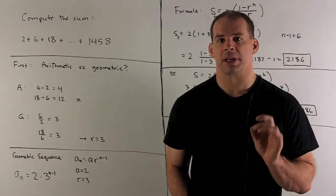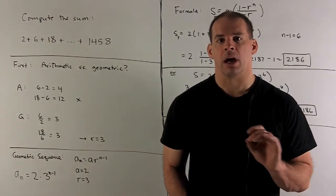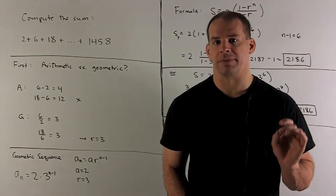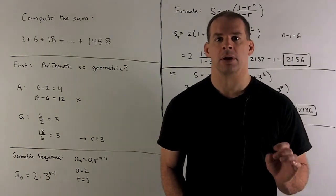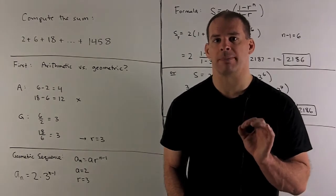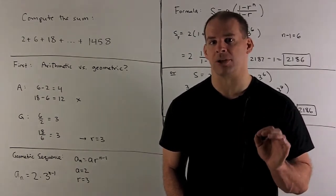Compute the sum 2 plus 6 plus 18 up through 1458. First, I need to determine whether our terms come from an arithmetic or geometric sequence.